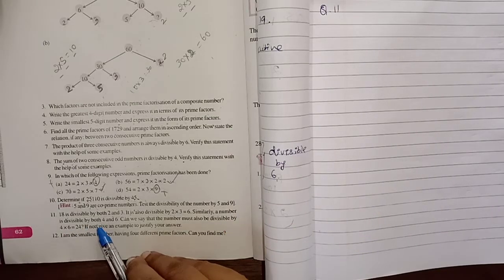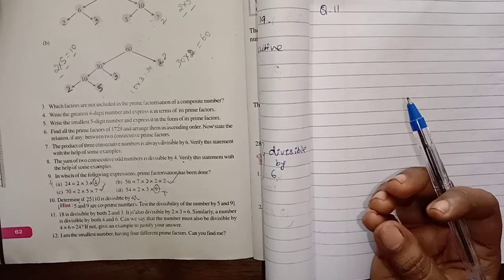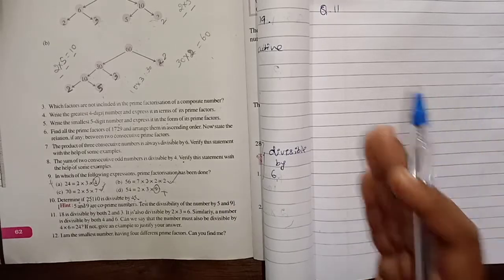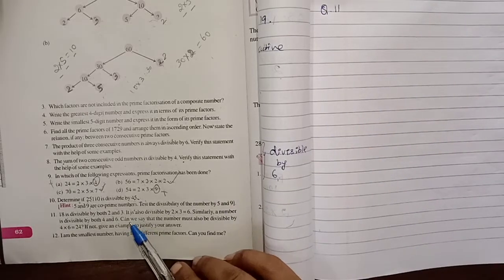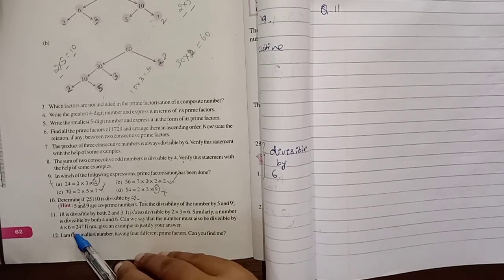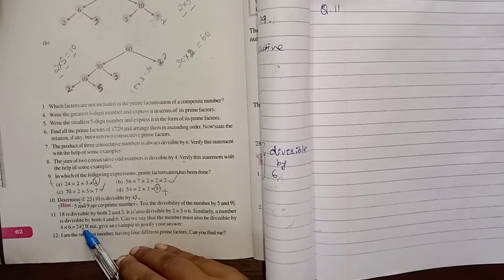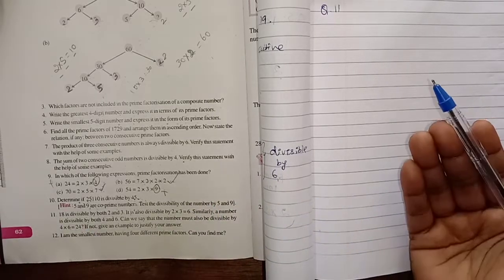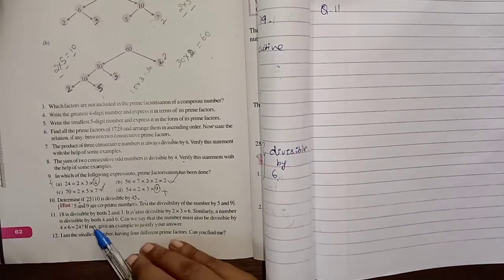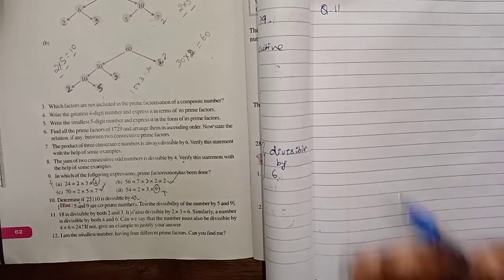a number is divisible by both 4 and 6. Can we say that the number must also be divisible by 4×6=24? If not, give an example to justify your answer.